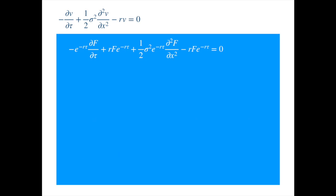So, the second and last terms cancel. And we divide by the exponential of negative r tau. To get the heat equation. Bam! So, we have transformed the Black-Scholes PDE to the heat equation, as promised.